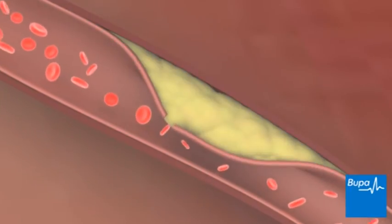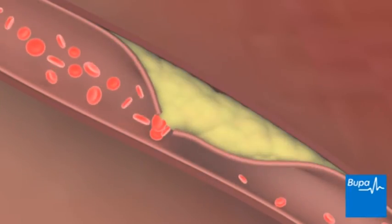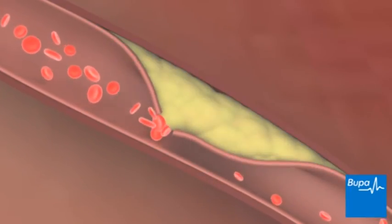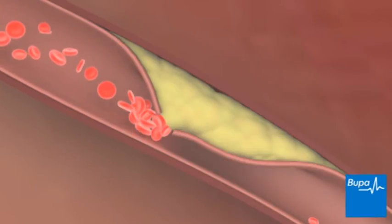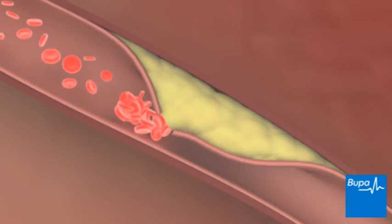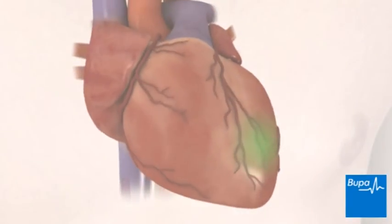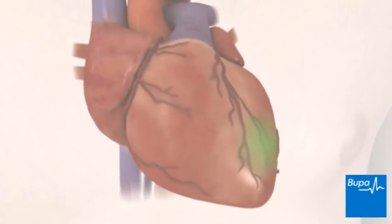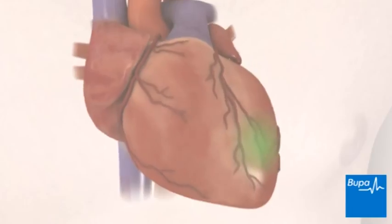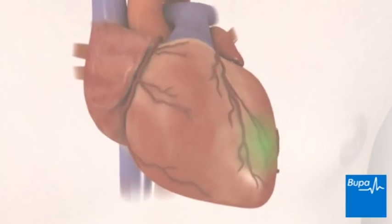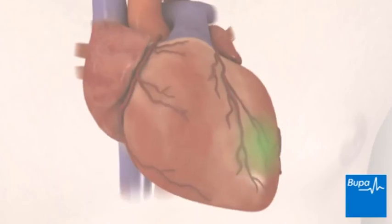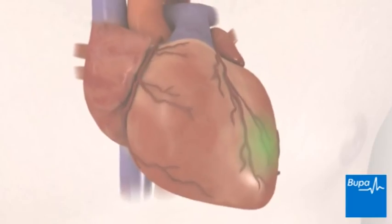If the plaque bursts, it causes a blood clot that blocks the artery. This cuts off the blood supply to an area of the heart. This is called a heart attack or myocardial infarction. It causes permanent damage to that area of the heart.